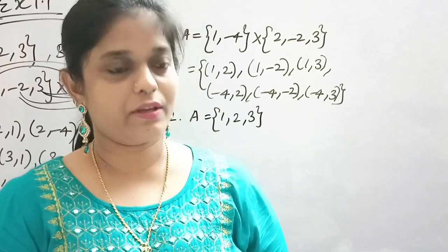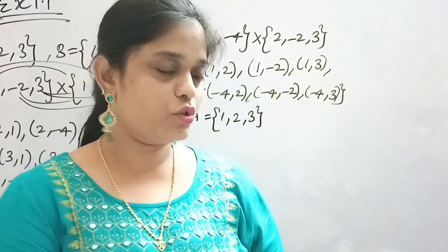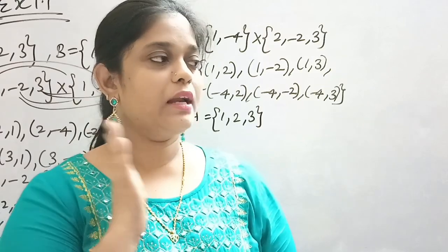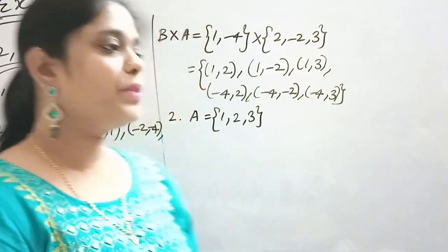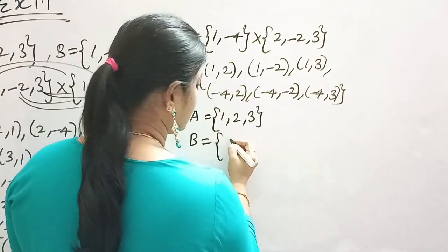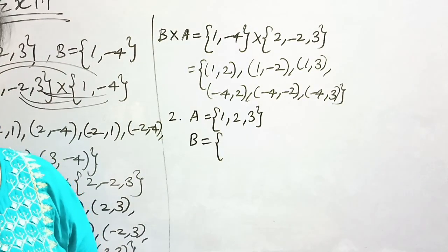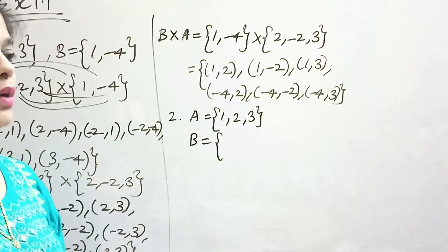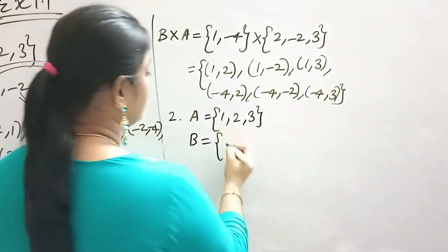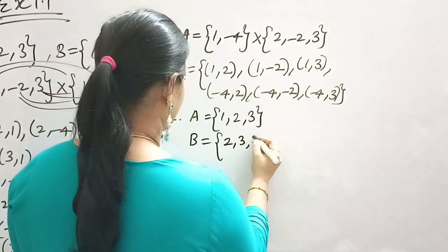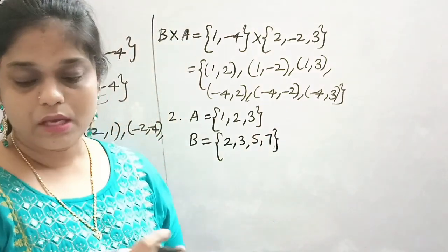Prime numbers are 2, 3, 5, 7, 11 — but since we say less than 10, we take up to 9. Note: 1 is neither prime nor composite — that is special. So the prime numbers less than 10 are 2, 3, 5, 7. And if it said less than or equal to 10, we would include up to 10, but 10 is not prime so the set remains {2, 3, 5, 7}.